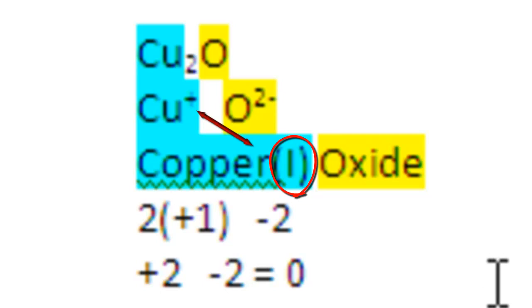And I'll remind you again, the Roman numeral has nothing to do with the formula subscripts. A common mistake is to call this formula copper 2 oxide, simply because of the subscript 2.